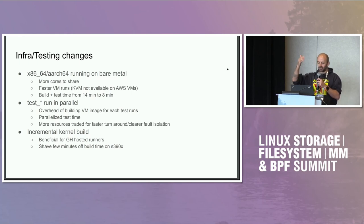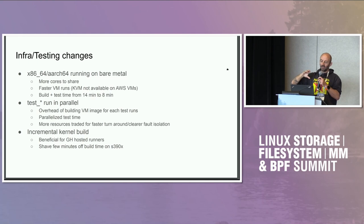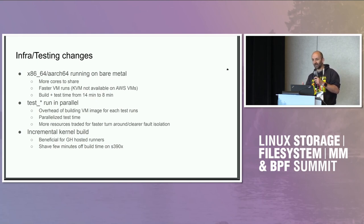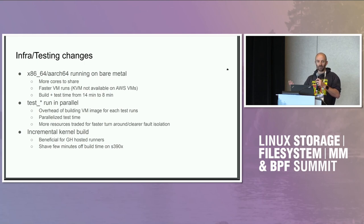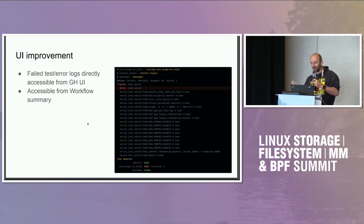Historically we used to build and then run all the different tests from self-test — test map, test verifier, test prog, test progs, no LU32 — all together. Now we build and then run these different tests separately, so we get more parallelism. It costs more overhead to build the VM images, but at the end it runs faster and makes it more obvious what is failing. Daniel also added incremental kernel build, which makes a meaningful difference on less beefy machines like s390x or GitHub-hosted runners.